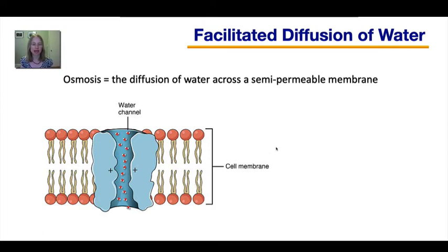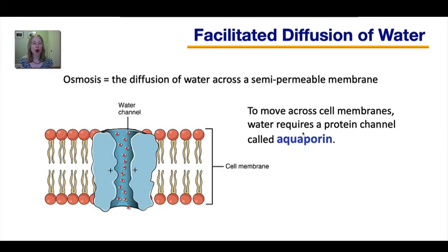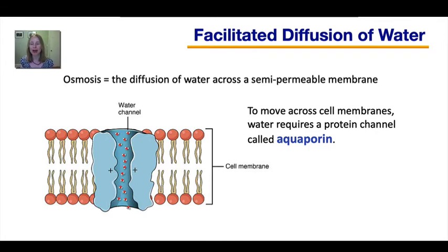A small minority of water molecules can get across through simple diffusion, but the great majority use facilitated diffusion. Water requires a protein channel called aquaporin to get into and out of our cells. The scientists who discovered aquaporin actually won a Nobel Prize in medicine.